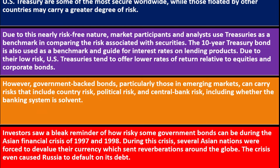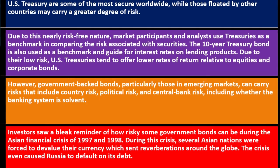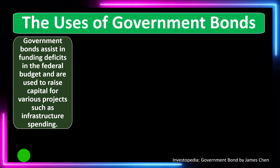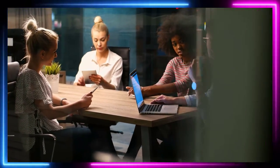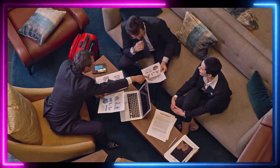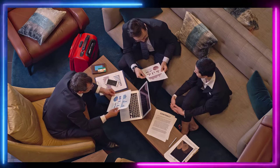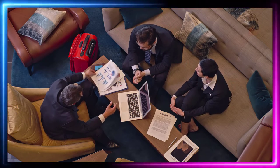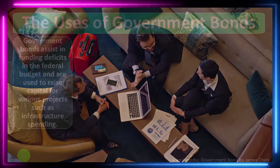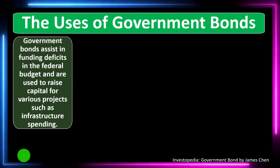Investors saw a bleak reminder of how risky some government bonds can be during the Asian financial crisis of 1997 and 1998. During this crisis, several Asian nations were forced to devalue their currency, which sent reverberations around the world. The crisis even caused Russia to default on its debt. A default is a huge event — if a government or corporation promises to pay bonds and fails to do so, confidence collapses, often leading to a downward spiral. Countries would want to avoid this by maintaining trust in their systems and their ability to pay their obligations.